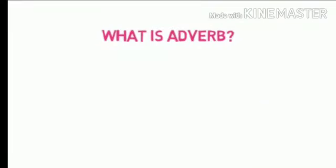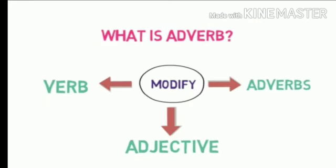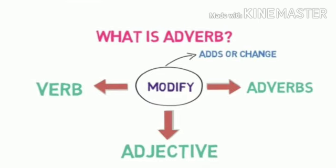What is an adverb? Adverbs are words that mostly go with verbs. An adverb is a word which adds to the meaning of a verb, an adjective, or another adverb. Broadly speaking, an adverb can modify a part of speech — 'modify' means it can add or change. So basically, an adverb can modify a verb, adjective, or adverb.